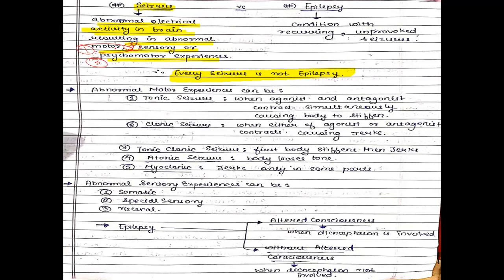All seizures are not necessarily motor, sensory, or psychomotor — they can be motor, sensory, or psychomotor. And every seizure is not epilepsy. So then what is epilepsy? Epilepsy is a condition with recurring and unprovoked seizures. A seizure is abnormal electrical activity in the brain which is either motor, sensory, or psychomotor experience. If seizures are repeated, then it is epilepsy.